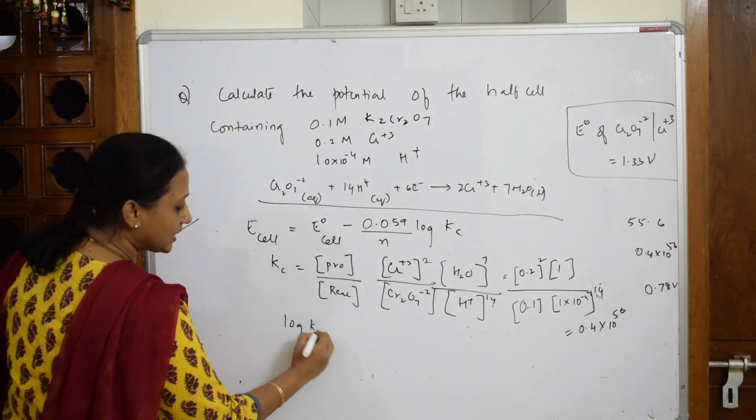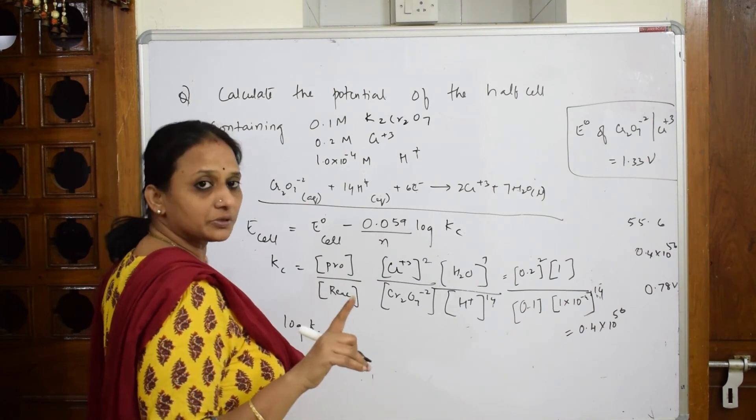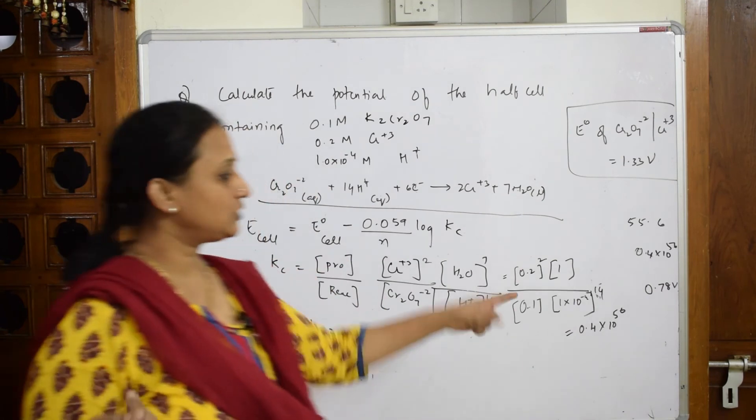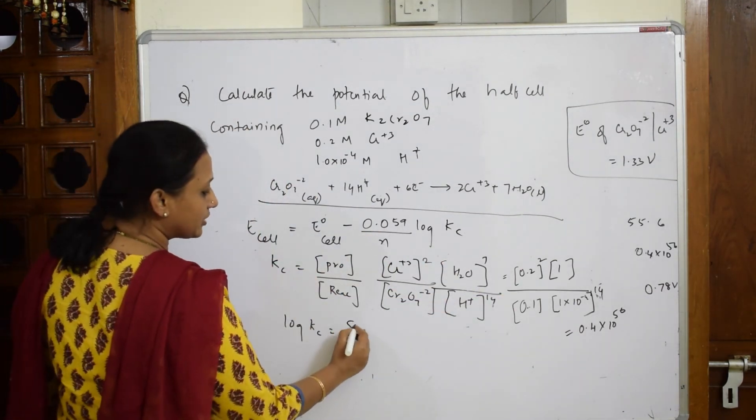So log Kc if I have to find out for this 0.4×10^56, first you find out log 4, you will get the value then multiply with that. So when I find the log value I get an answer of 55.6.